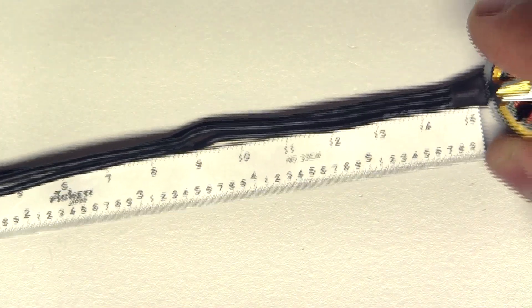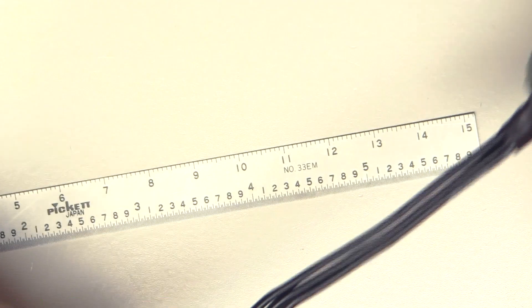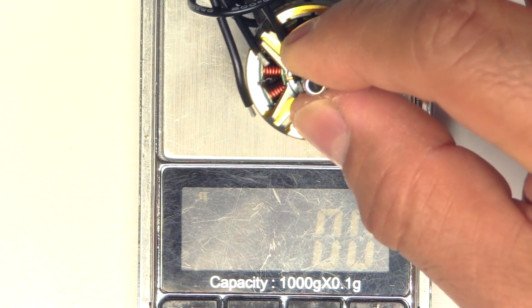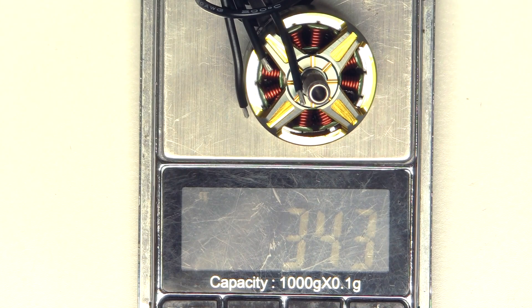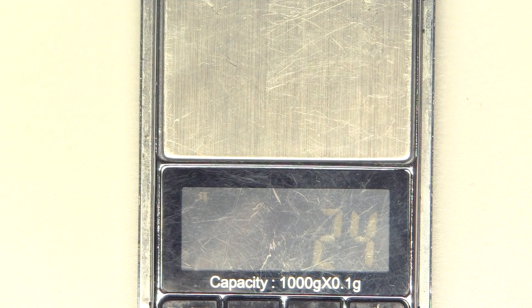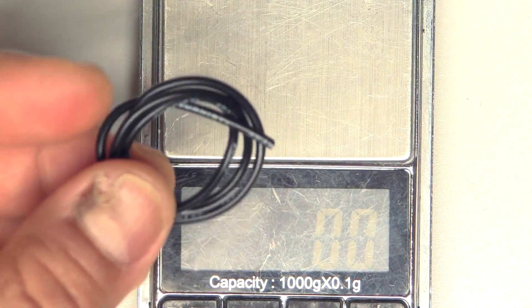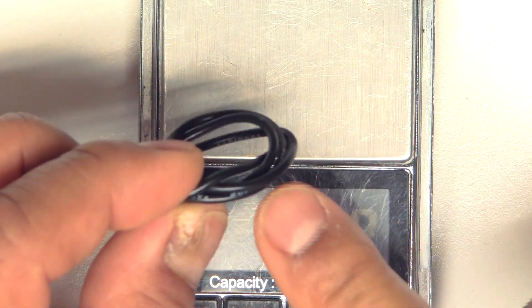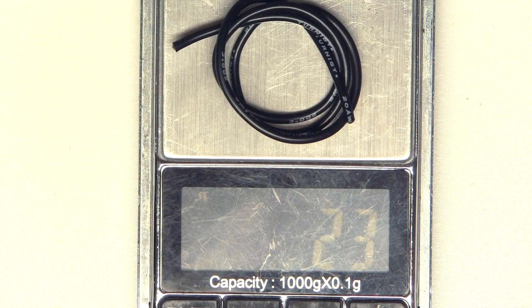So let's see what it weighs with about 150mm of wire. This is 20 gauge wire, so pretty standard. It's about 2.3 grams. So we'll tear that.